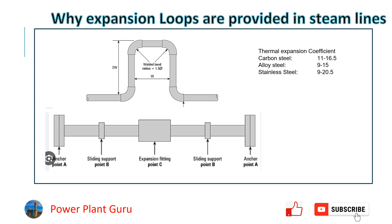We know that before boiler start-up, the temperature is around ambient — around 35 to 40 degrees. When the boiler starts, the main steam line temperature heats up and goes up to 550 degrees. So there will be around a 500-degree rise, and we need to accommodate the thermal expansion due to this temperature difference.